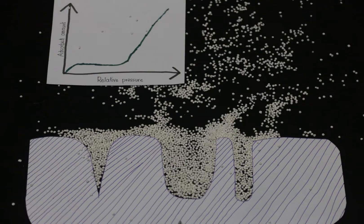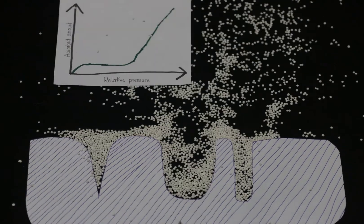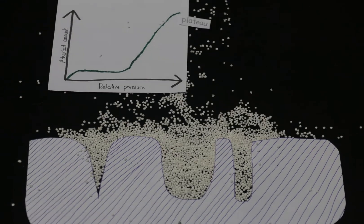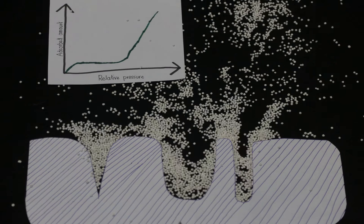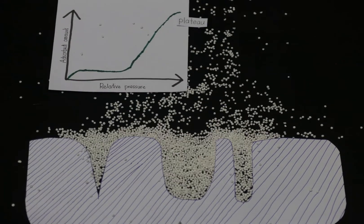Small pores will fill out before the larger pores. If the pores are too large, they cannot be filled completely, denoted by the approach to a plateau value that completes the adsorption branch of the isotherm.